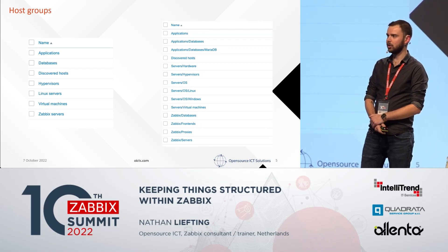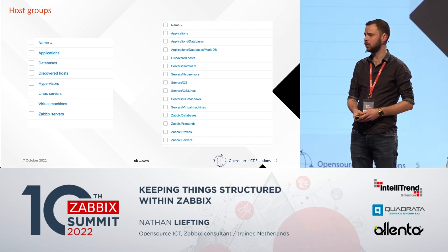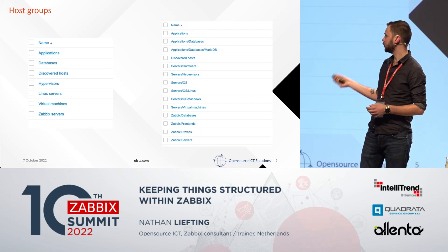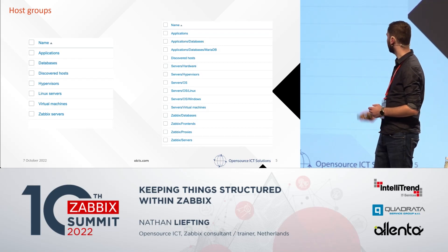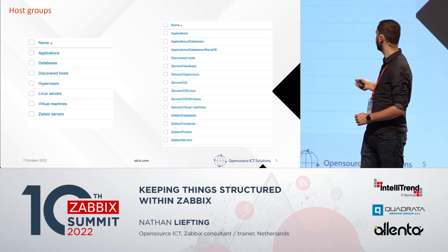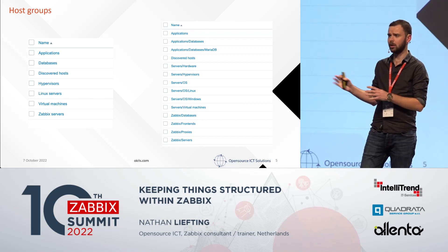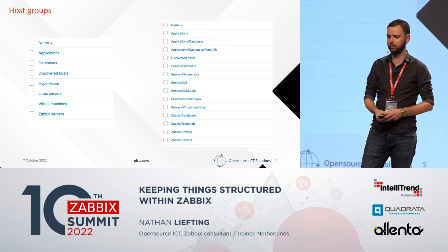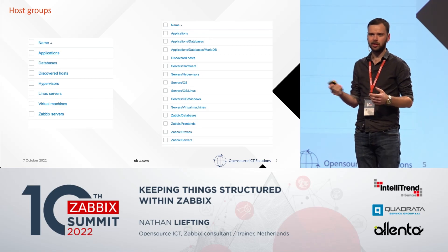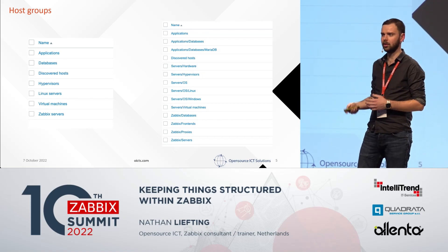First, the host groups. Whenever you get started with Zabbix, you'll see the default setup — a nice start, but we can do it way better. In the initial setup, you won't get any subgroups. We can see on the left here that we've started using subgroups — something like Applications/Databases or even Applications/Databases/MariaDB. Why use subgroups like that? Because it makes it so much easier to drill down, put all your hosts in there, and later filter on the higher groups to get information about all the subgroups as well. And because Zabbix sorts most things alphabetically, you get a nice structure where you can easily find related items.